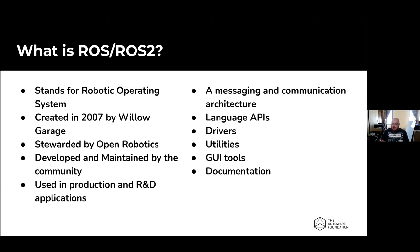ROS was created originally in 2007 by a group called Willow Garage. They were on the East Coast and spun out of one of the major universities there - a group of about 10 people. Willow Garage eventually evolved into what is now Open Robotics, which is the Open Source Robotics Foundation and the Open Source Robotics Corporation. They are the stewards of ROS - they help manage the core repositories and move the operating system forward.